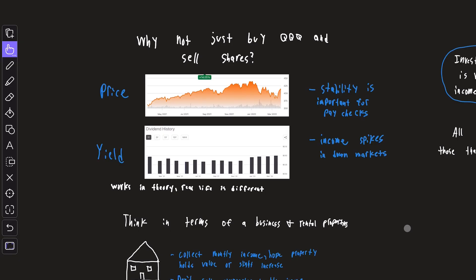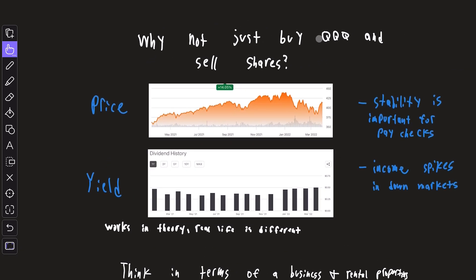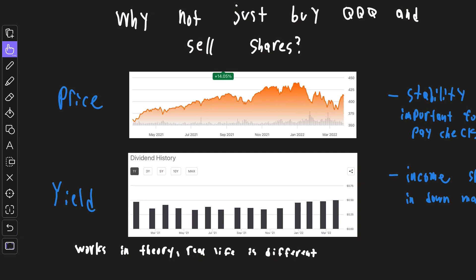Now I want to take this opportunity to quickly discuss a topic people ask all the time: why not just buy something like the QQQ and sell shares as you go instead of focusing on monthly or quarterly dividends? Yes, you can technically do this—it's called taking profits—but comparing it to consistent monthly dividends is extremely flawed in my opinion for two primary reasons.